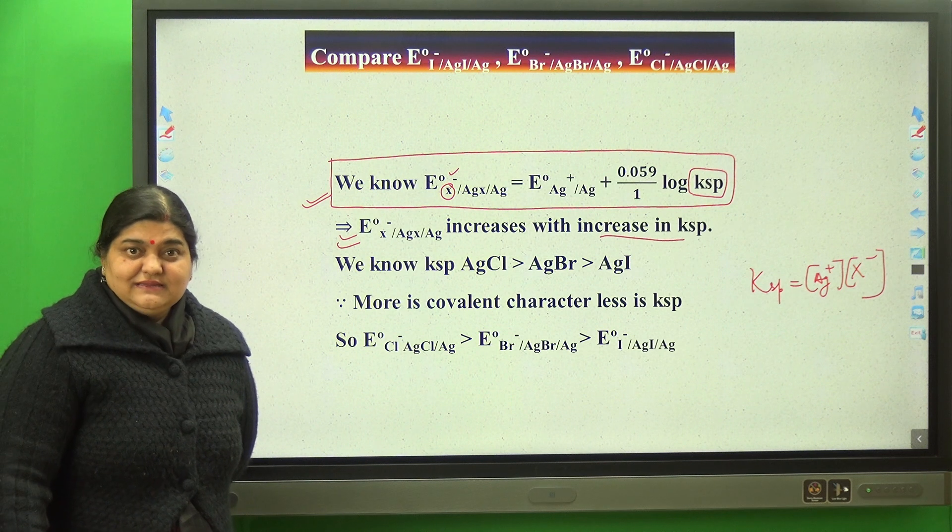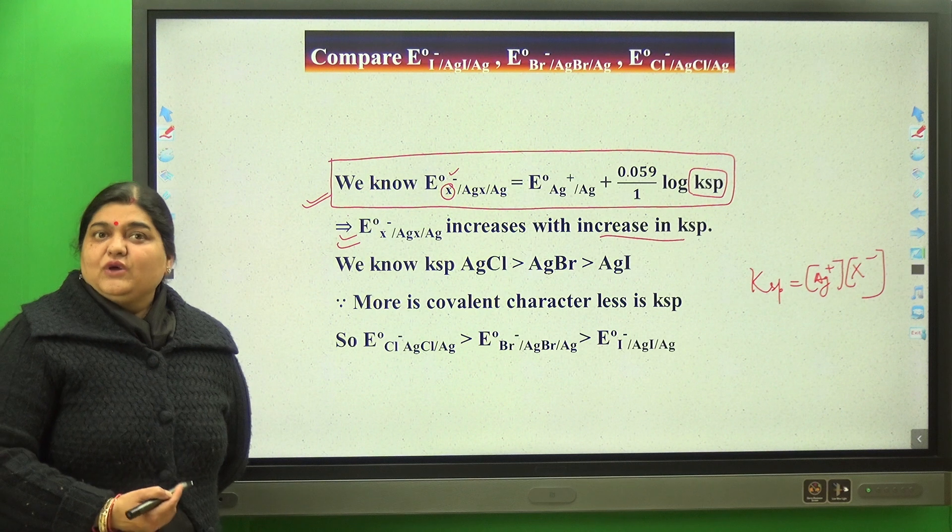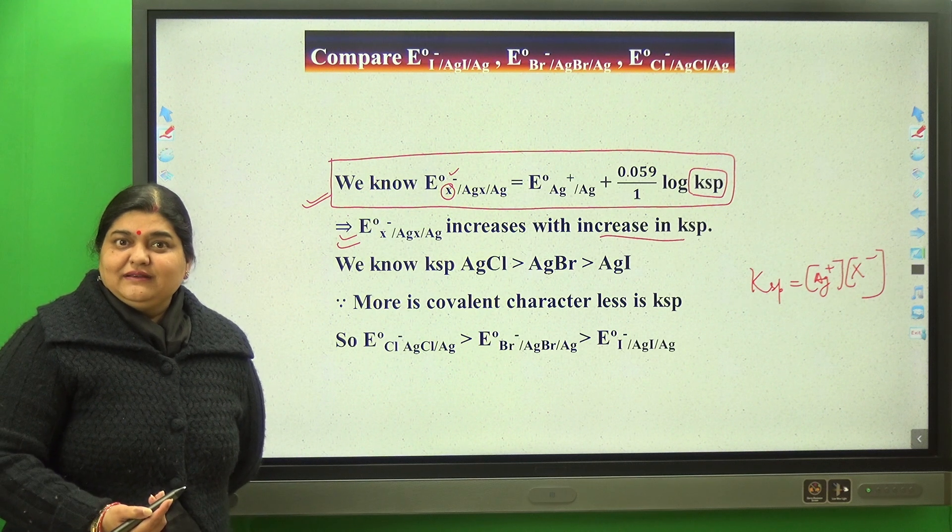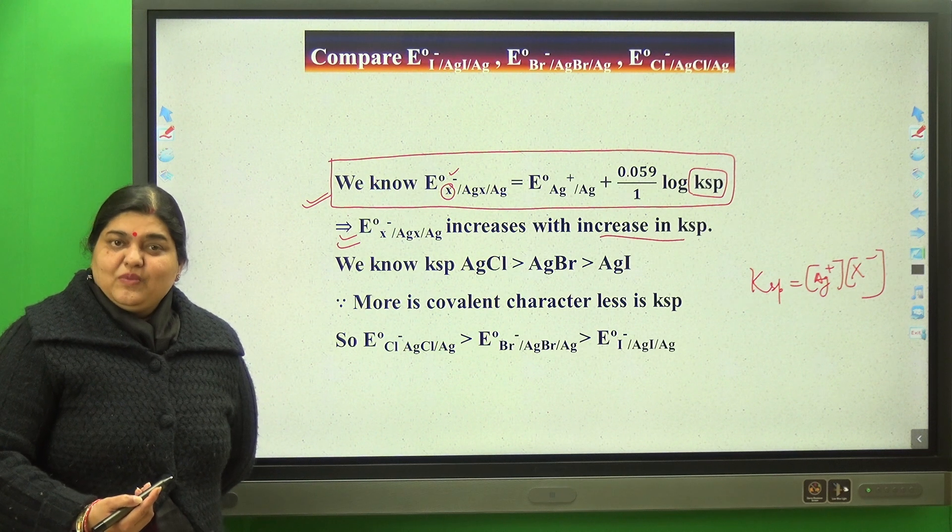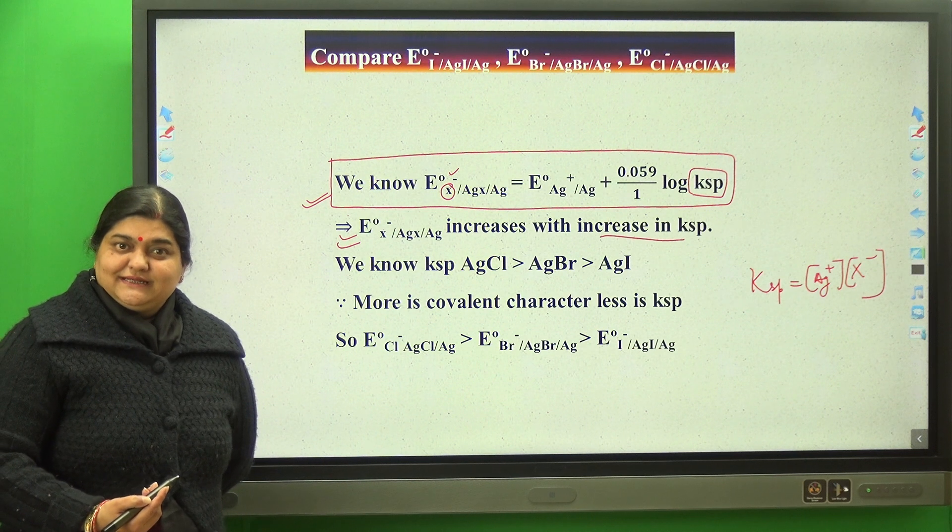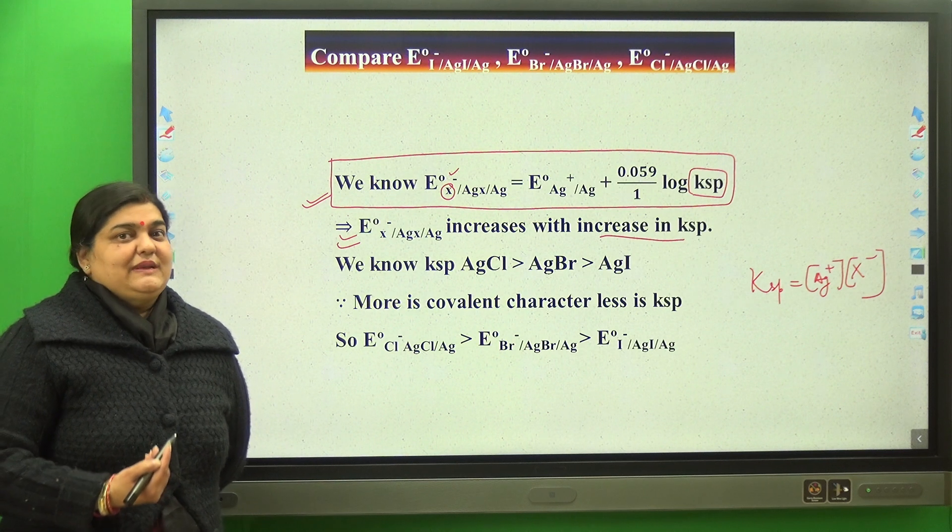More will be the number of ions, more will be the KSP. More will be the ionic character, more will be ions. Or in other words, more is the covalent character, less will be the ions, less will be KSP.